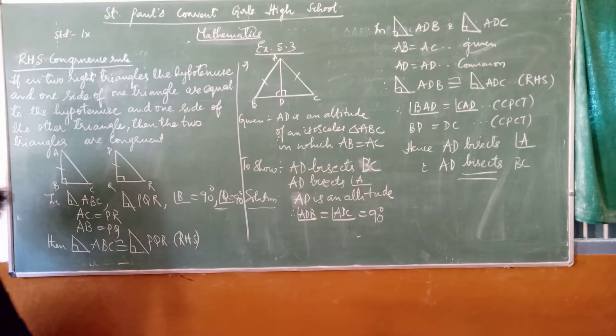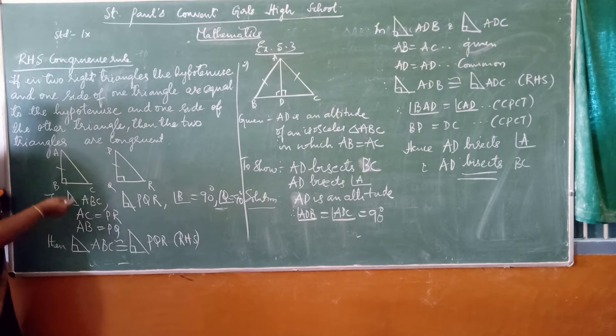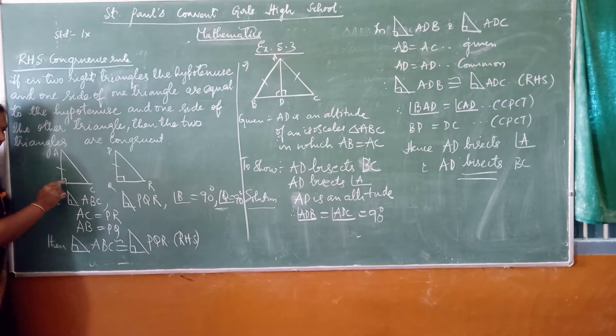Now, in these two right angle triangles, the side opposite to the right angle, that will be called as hypotenuse.